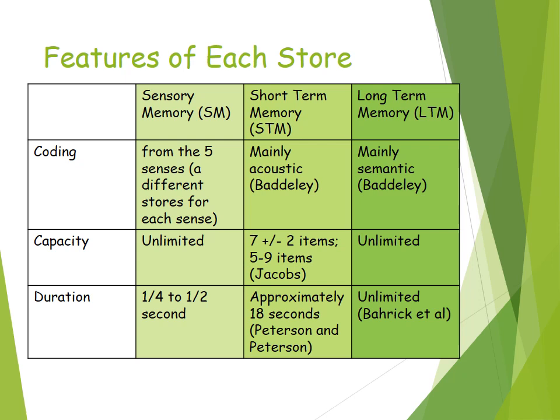Short-term memory duration is approximately 18 to 30 seconds. This was Peterson and Peterson's study, where participants had to remember a consonant trigram — three consonants together, for example T, X, Y. They then had to count backwards from a three-digit number in threes, and were asked to recall their trigram after three seconds, six seconds, nine seconds, and so forth.